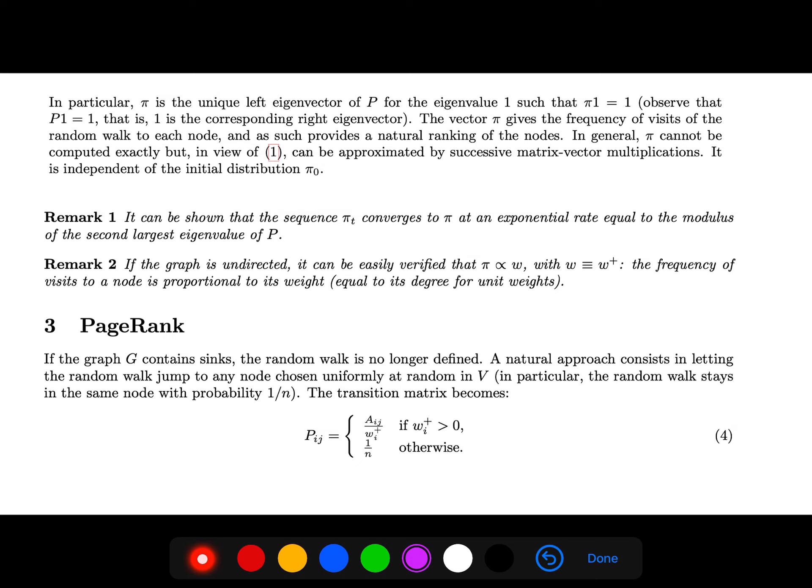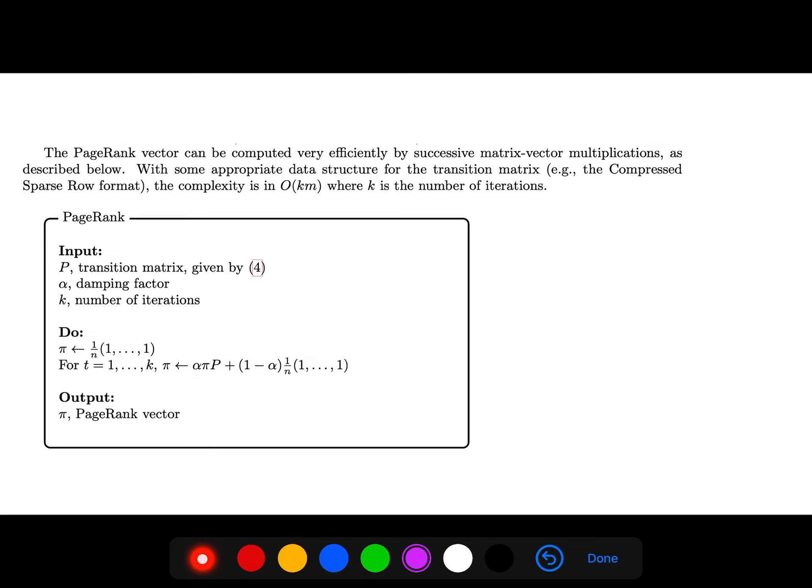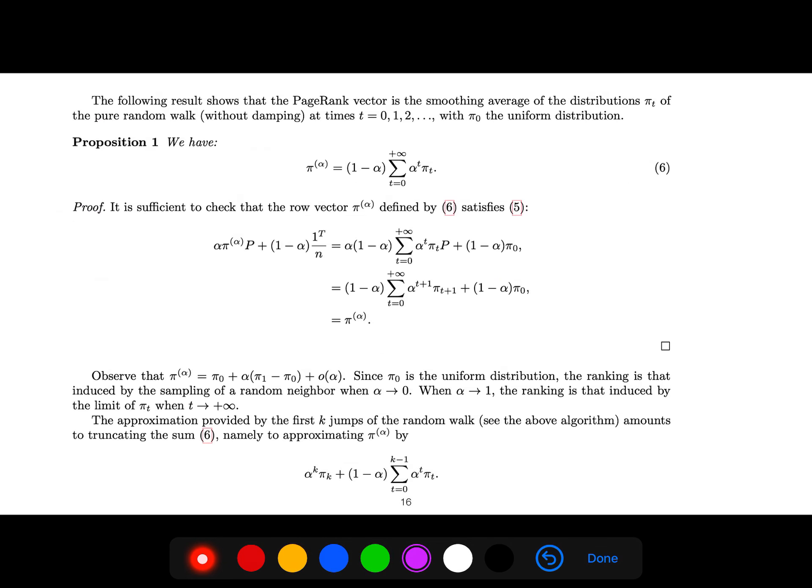If the graph contains sinks, the random walk is no longer defined. A natural approach consists in letting the random walk jump to any node chosen uniformly. That's the idea of teleportation—alpha. We call it alpha teleportation in many articles. It's just a probability between zero and one. The corresponding stationary distribution can be written like this, and then you can calculate this pi vector.